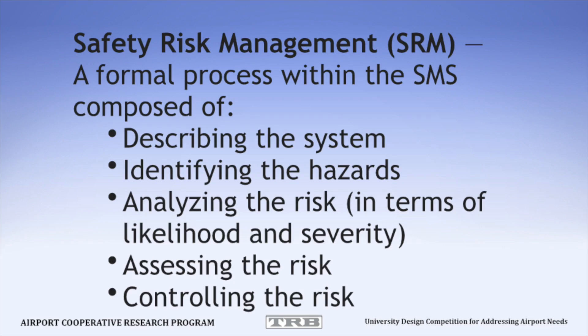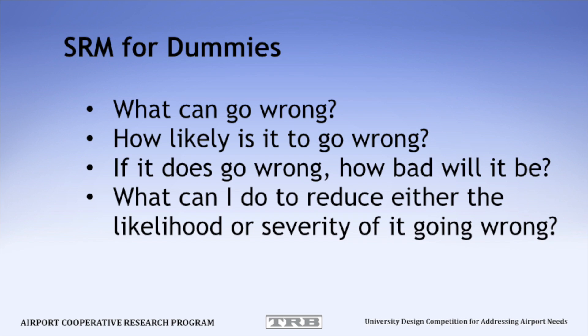The heart of every safety management system is the safety risk management component. Safety risk management is a formal process within the SMS composed of describing a system, identifying the hazards, analyzing the risk, assessing the risk, and then controlling the risk. In simple terms, ask yourself the following questions about your submissions: What can go wrong? How likely is it to go wrong? If it does go wrong, how bad will it be? And what can I do to reduce either the likelihood or severity if it does go wrong?